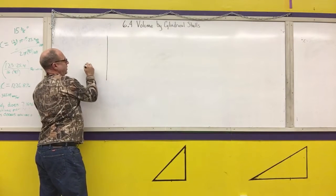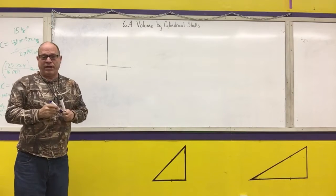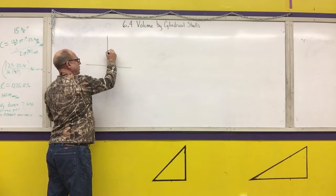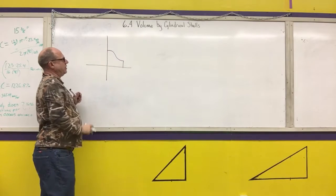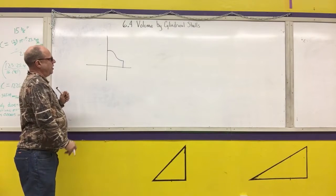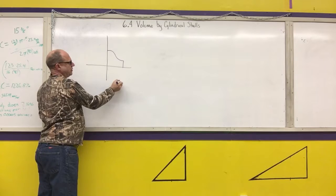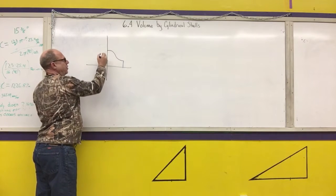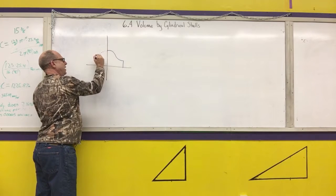If I take the following region, let's say I have a curve that looks like this, and I want to rotate this about the y-axis. If I rotate it about the x-axis, I would be able to use disk method. But if I rotate it about the y-axis, notice the shape I get.